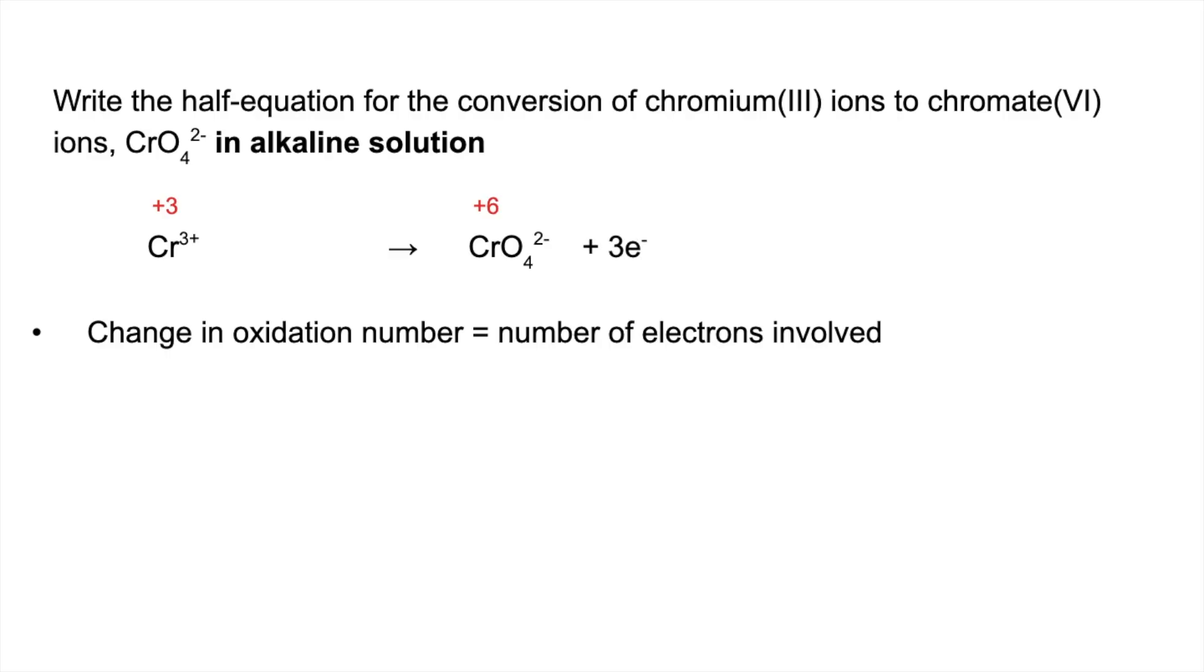So now we've got those in we balance the charge left and right with hydroxide ions. We've got a total charge of +3 on this side from this Cr³⁺ ion. We've got 2 minus, 3 minus, so we've got 5 minus on this side. So we're going to use OH⁻ ions to balance the charge. So if we put 8 hydroxide ions on the left that gives us the 5 minus on each side that we need.